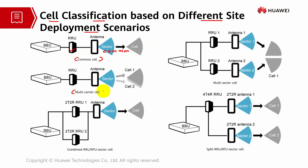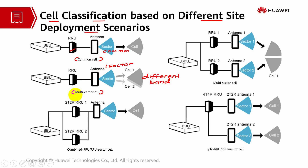Moving on to multi-carrier cell. In a multi-carrier cell scenario, the cell works on different bands and they are set up in a single sector. This expands capacity without deploying a new EOB. Multi-carrier networking applies to densely populated urban areas with high traffic, such as exhibition centers, waiting halls, shopping malls, CBDs (central business districts), and residential areas.